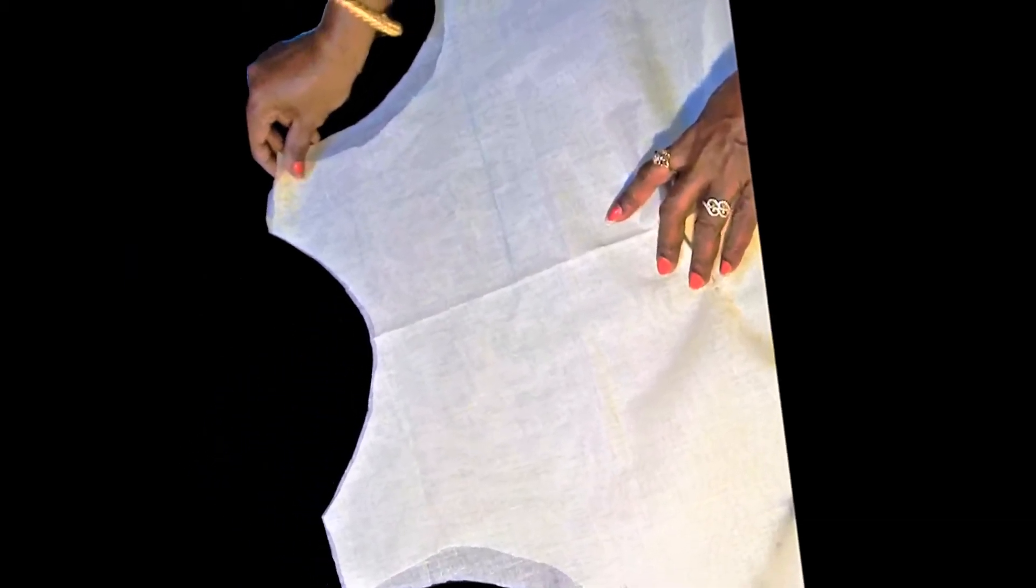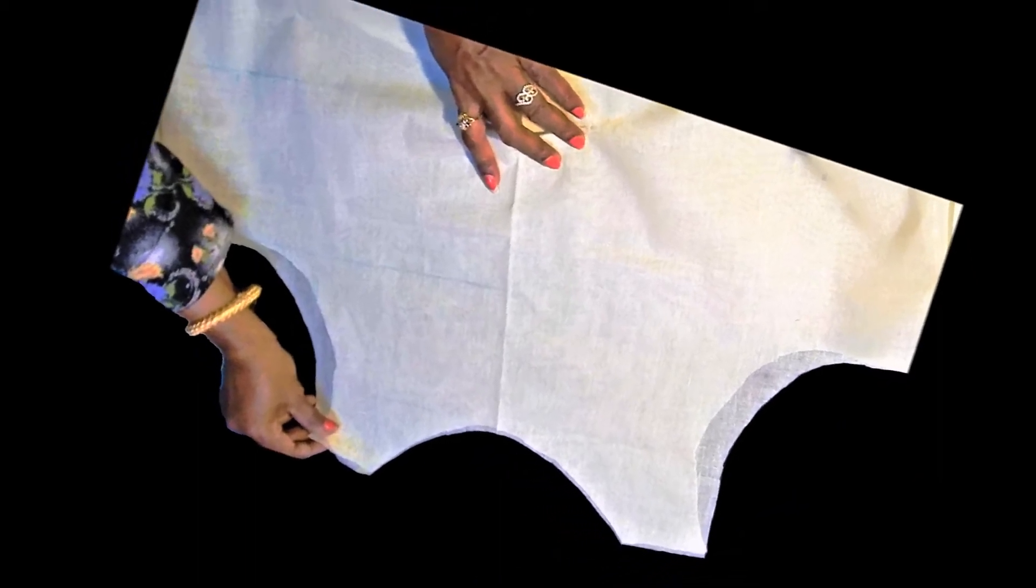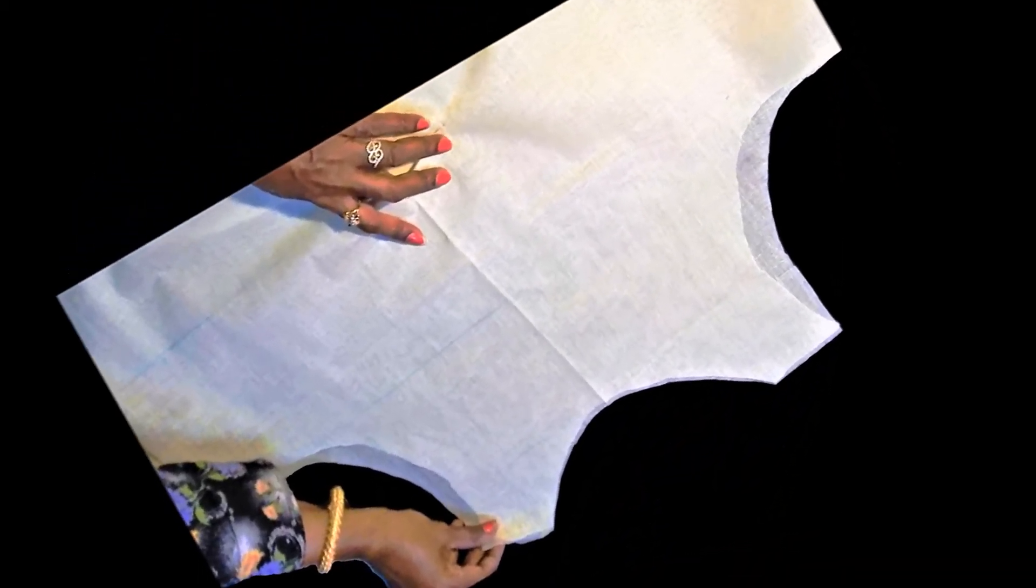Hi everyone, welcome back to my channel. Today let's watch how to draft and cut boat neck in a very simple way. Boat necks generally are wide and high just below the collar bone with a proportionate narrow shoulder.